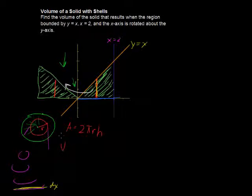So then, if we wanted to find the volume, the volume of each shell, we would say 2πr times the height, times dx, some change in x.